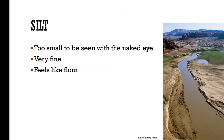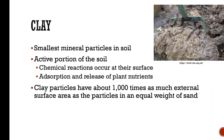Silt is too small to be seen with the naked eye — it's very fine, you're going to see it in riverbeds, and it feels like flour to the touch. Clay is the smallest mineral particle and is the active portion of the soil. Chemical reactions occur at its surface, and adsorption and release of plant nutrients happen here. Clay particles have about a thousand times as much external surface area as particles in an equal weight of sand.